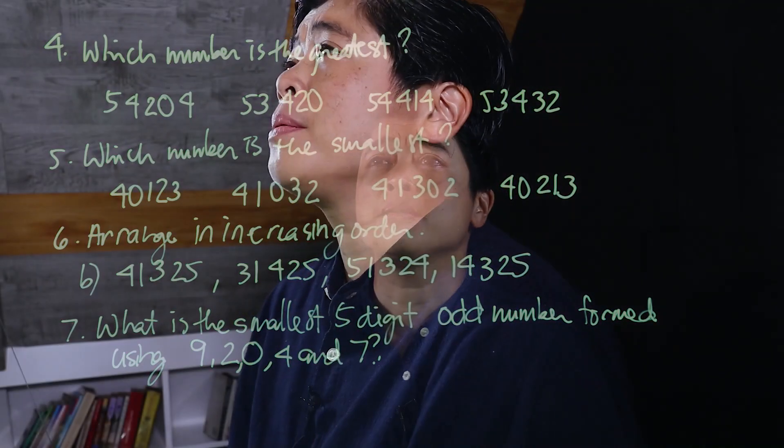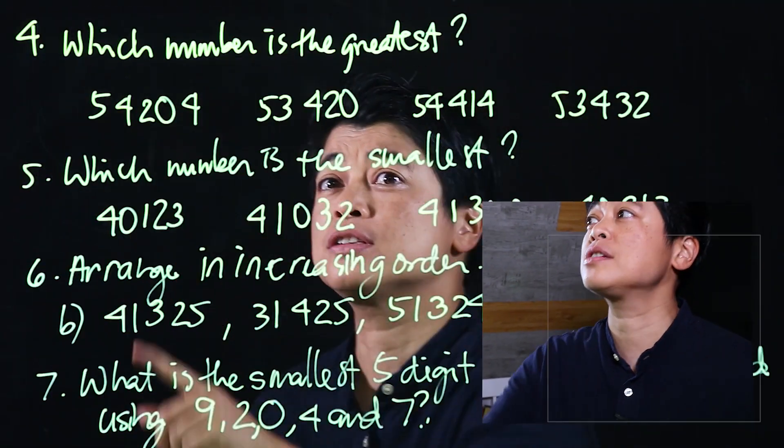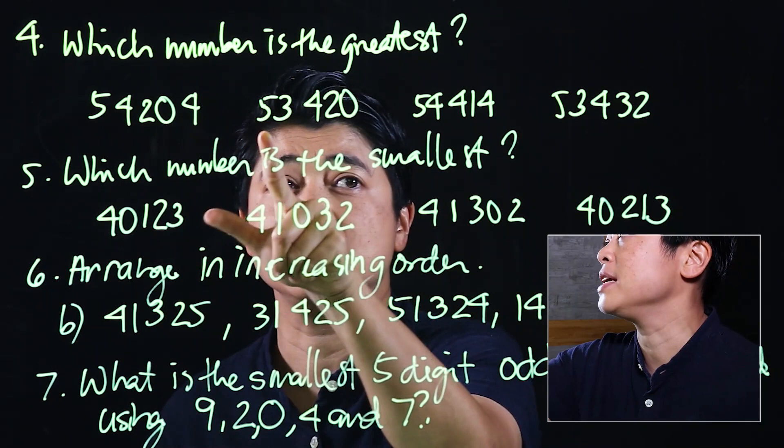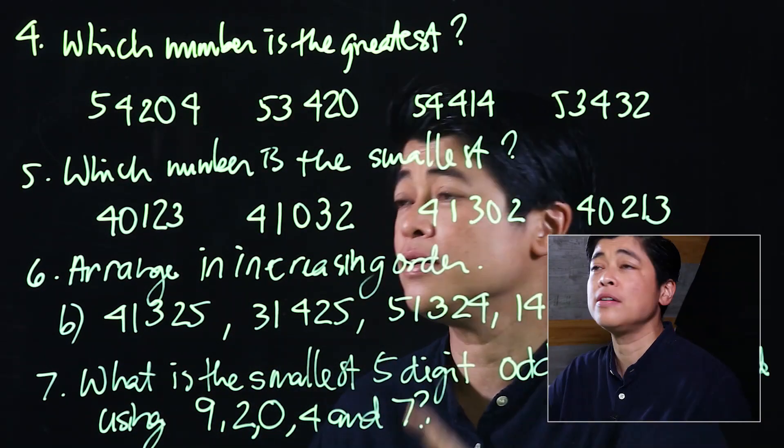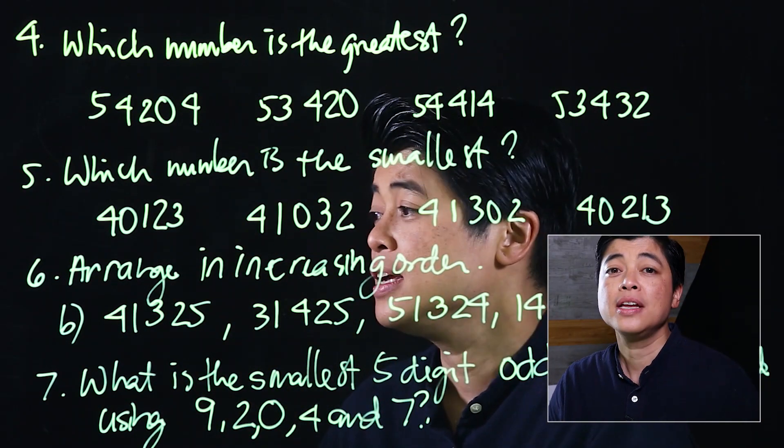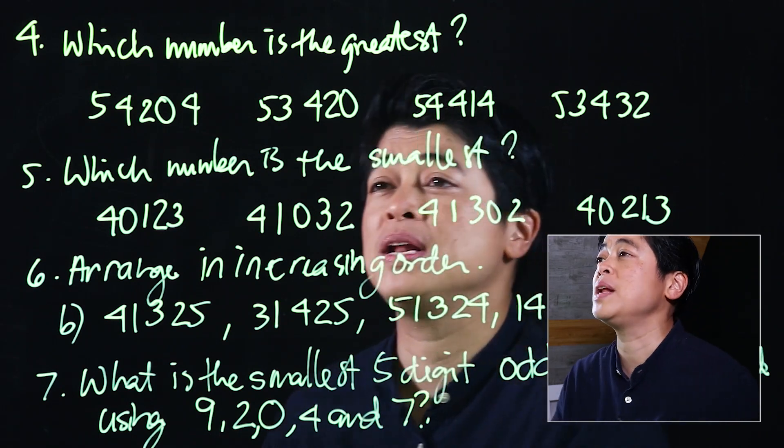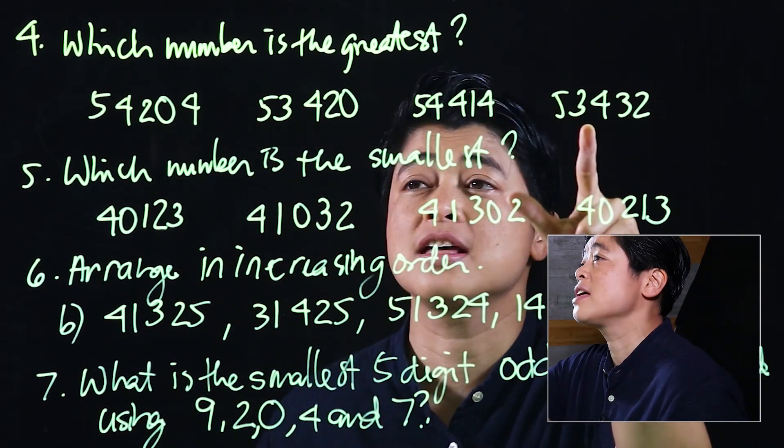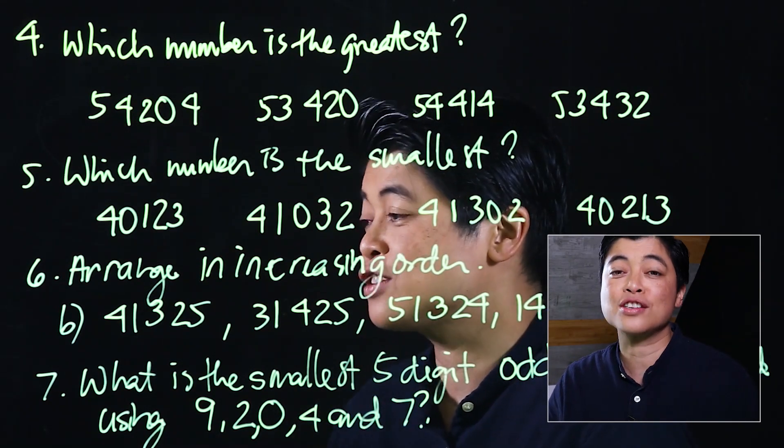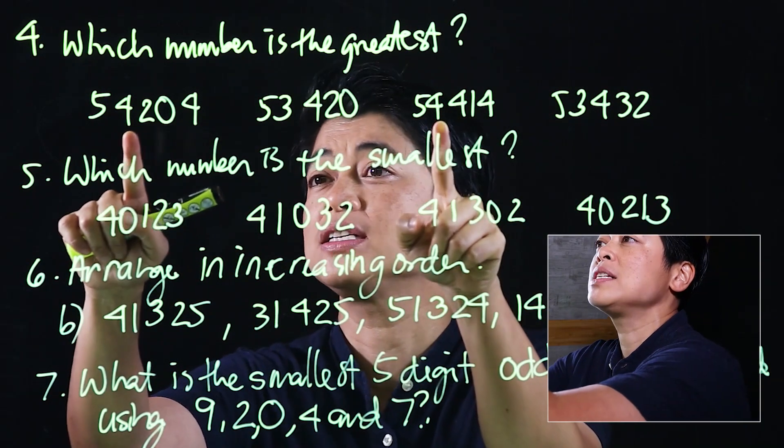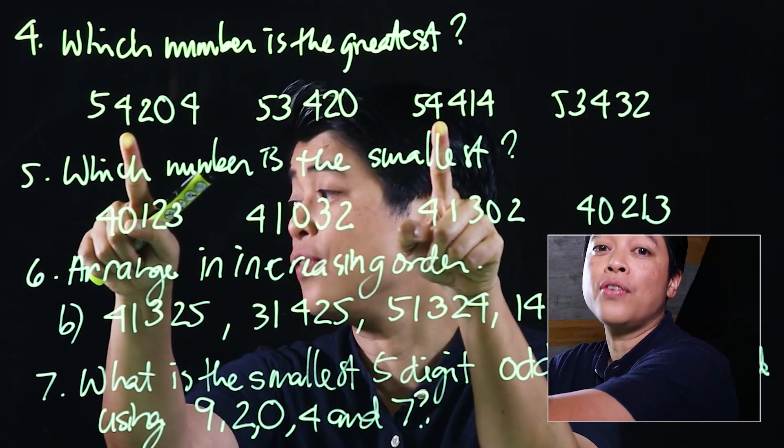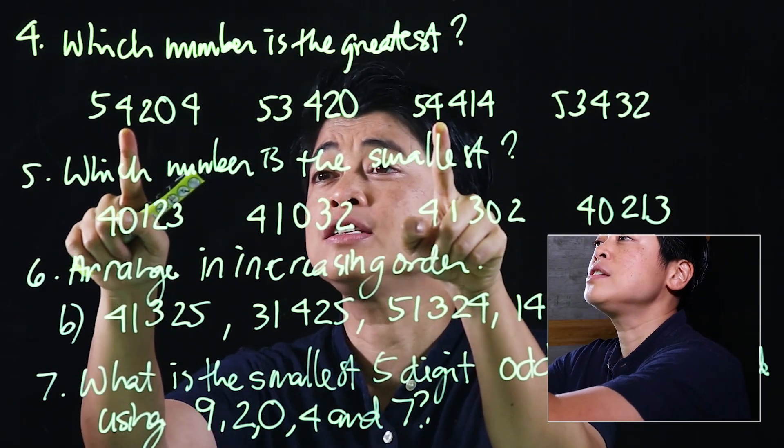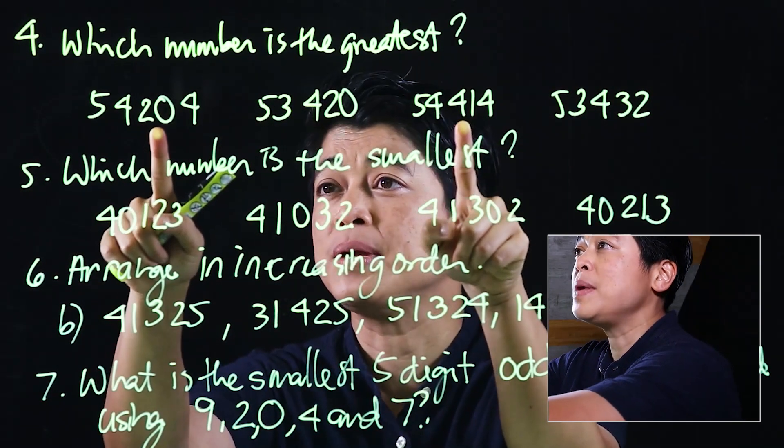Starting with problem number 4, which says 'which is the greatest,' we start with the ten thousands place. All of them start with a 5, so then we go to the thousands place. There's a 4, there's a 3, there's a 4, and there's a 3. We want the greatest, so it should be the ones that follow the 5 with a 4. Between these two, the greatest will be the 400 over the 200, which means 54,414 is the greatest.